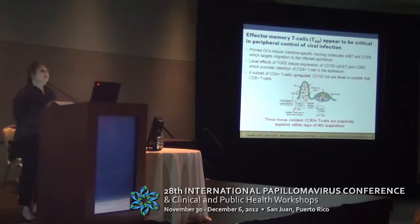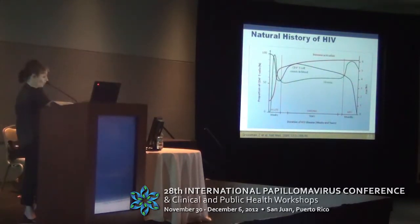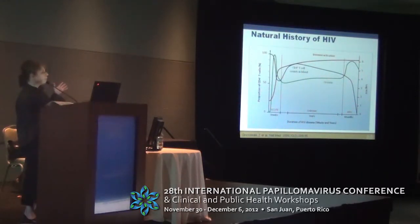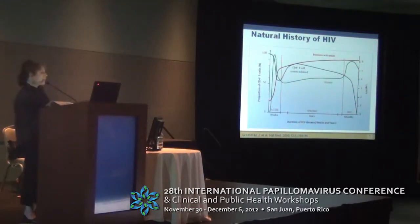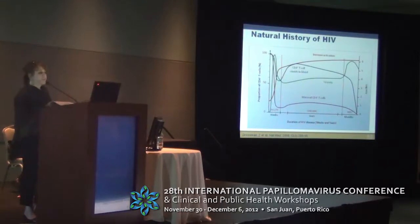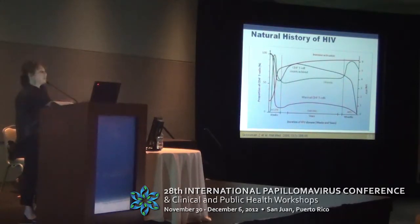This is important in HIV because these tissue-resident CCR5-positive T cells are actually massively depleted within days of HIV acquisition. To remind you of the natural history of HIV: if you look at peripheral blood CD4 count, there's an immediate drop during the acute phase of HIV infection, but it rebounds relatively nicely and stays reasonably high through most of chronic infection until just prior to the onset of AIDS. Contrast that to what happens in the mucosal CD4 compartment: when you get acute infection, you get almost complete decimation of the memory CD4 population at the mucosal surface. Importantly, that population does not appear to reconstitute sufficiently as you would see in peripheral blood.